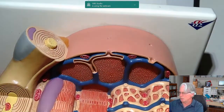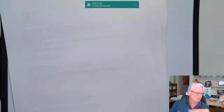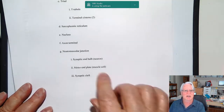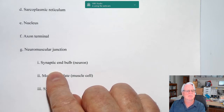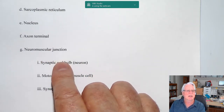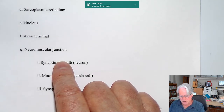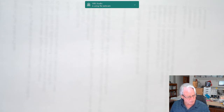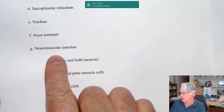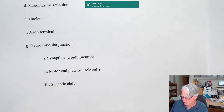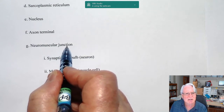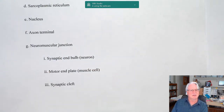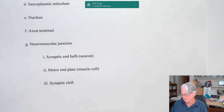Now we'll talk about the neuromuscular junction — how we start the message on the membrane. We can break down the word: neuro refers to the nervous system, muscular to the skeletal muscle system. The neuromuscular junction is the junction where the nervous system meets the skeletal muscle system — where the two come together.